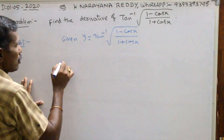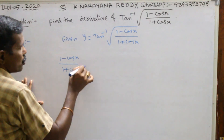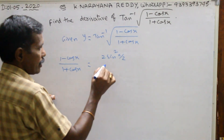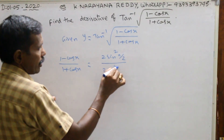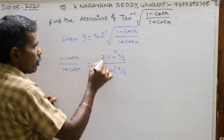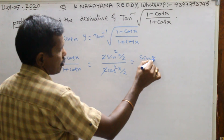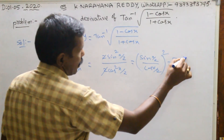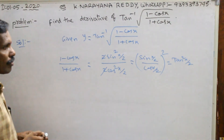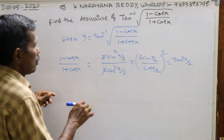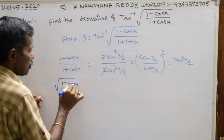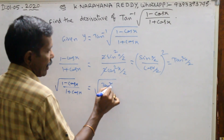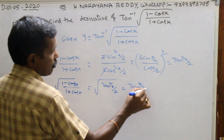First, I will find the value inside. 1 minus cos x equals to 2 sin square x by 2, and 1 plus cos x equals to 2 cos square x by 2 — these are the formulas. The 2's cancel, leaving sin x by 2 over cos x by 2, whole square. That is nothing but tan square x by 2. So root of 1 minus cos x by 1 plus cos x equals to tan of x by 2.